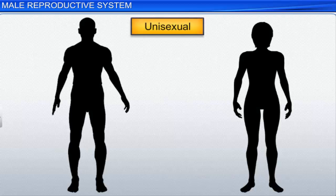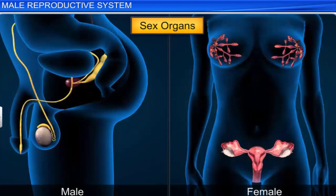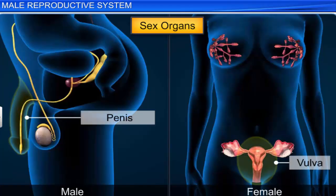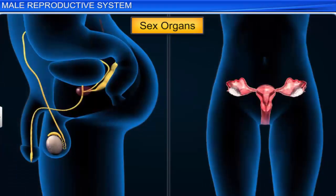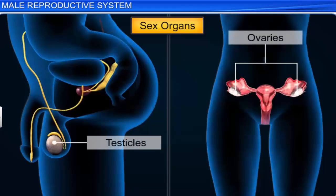Humans are unisexual and viviparous. The major reproductive organs include the external genitalia, like the penis in males and the vulva in females, along with a number of internal organs, including the gamete-producing gonads like the testicles in males and the ovaries in females.